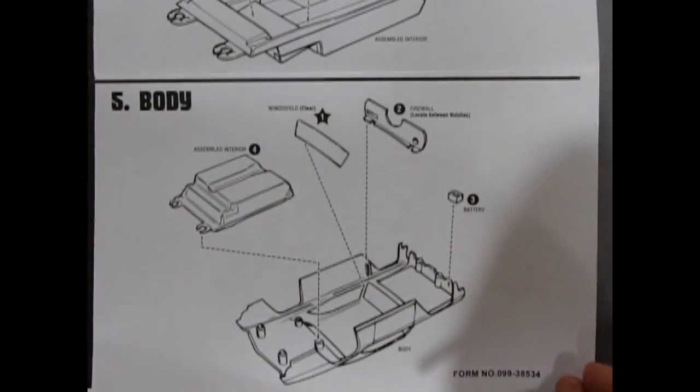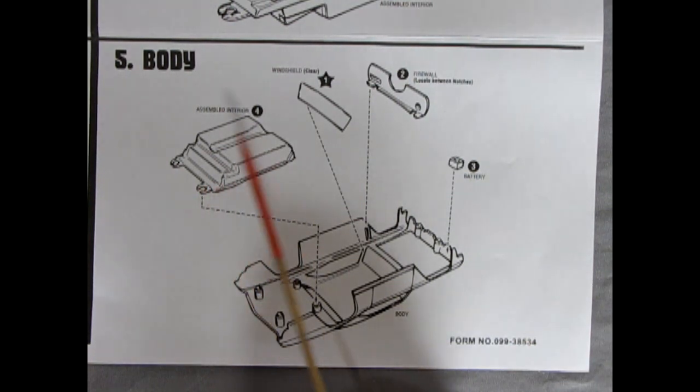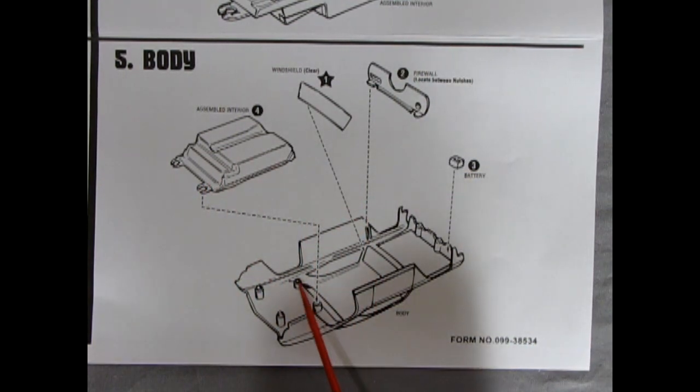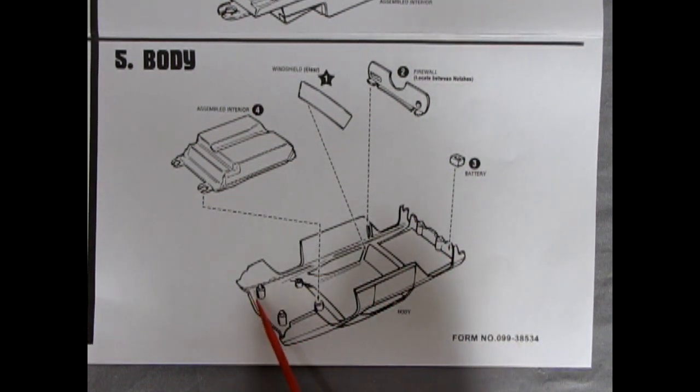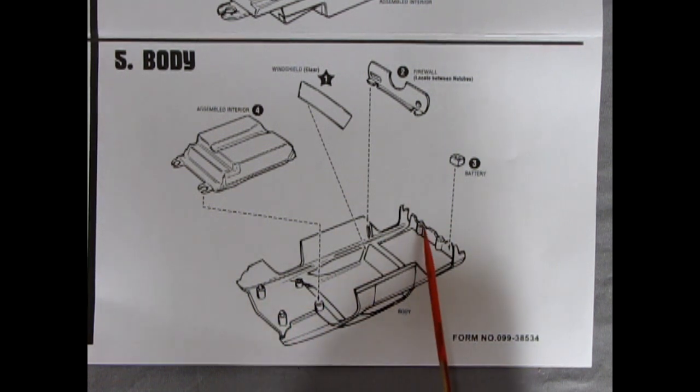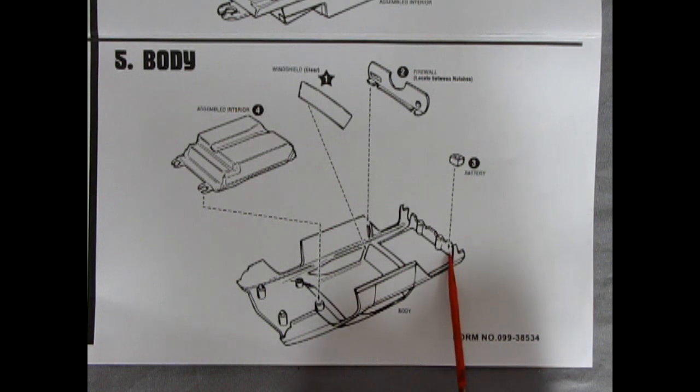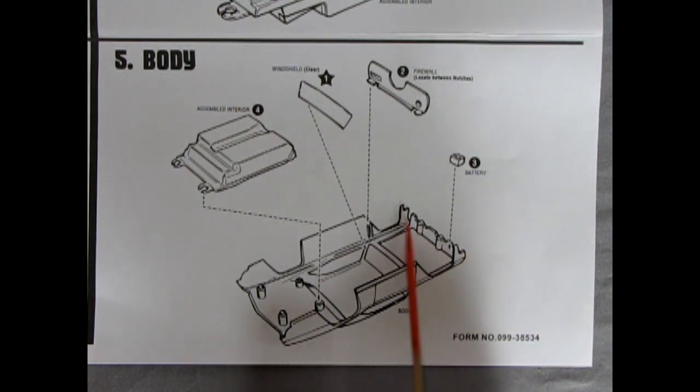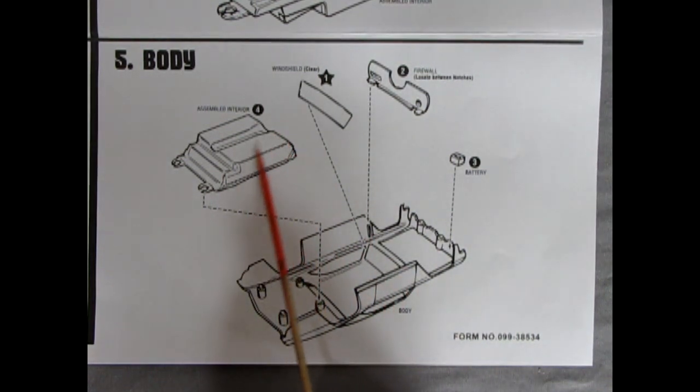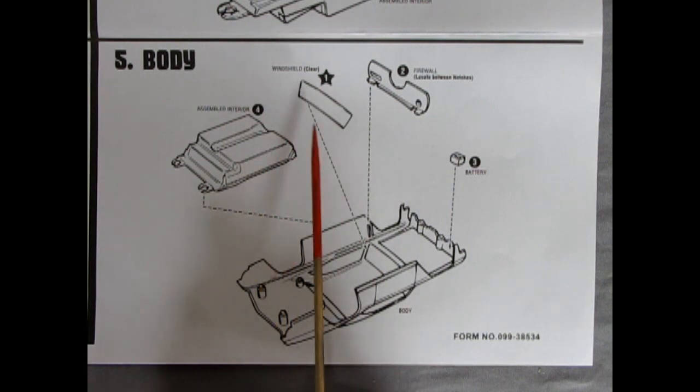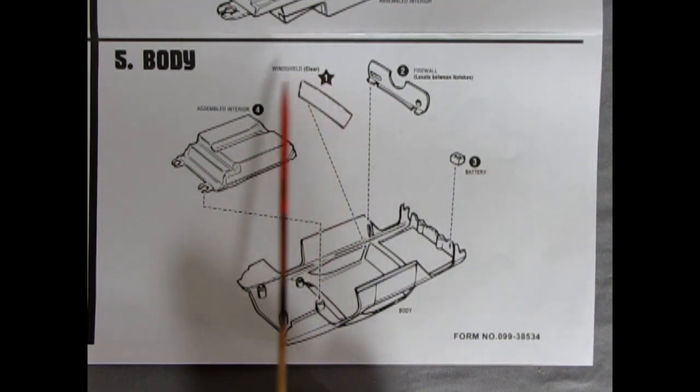So, now we get into our body components. We have our interior shell dropping in. Onto those posts there. And then we have our posts in the back and the front. So, again. Just like the promotional models of the day. You would screw the chassis. Onto the body. In that way. So, there we've got our battery going on. To our front radiator support wall. And our firewall. Going into these notches here. Which should come up. Touching, you know. The front of our assembled interior.